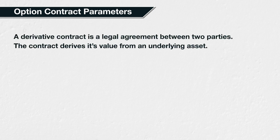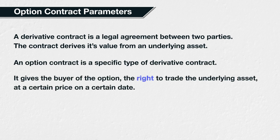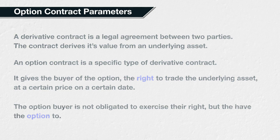In the previous lecture we covered what a derivative contract is. To recap briefly, a derivative contract is a legal agreement between two parties; the contract derives its value from an underlying asset according to the rules set out in the contract. An option contract is a specific type of derivative contract — it gives the buyer the right to trade the underlying asset at a certain price on a certain date. The buyer is not obligated to exercise their right, but they have the option to, hence the name option contract.